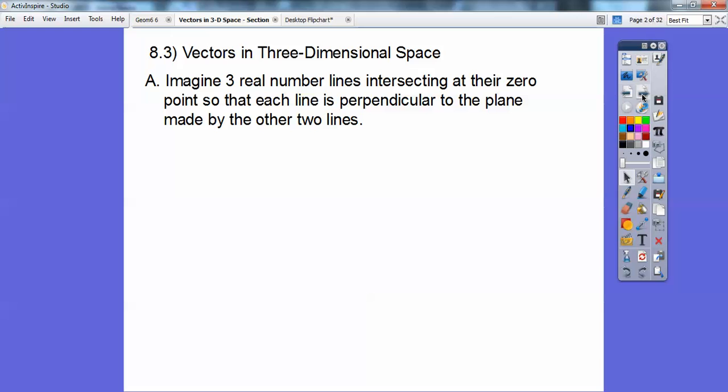So imagine three real number lines intersecting at zero, at their zero point, so that each line is perpendicular to the plane made by the other two lines. I know what you're thinking. What? Okay, just think of, for example, back in two-dimensional space, we had an XY plane.